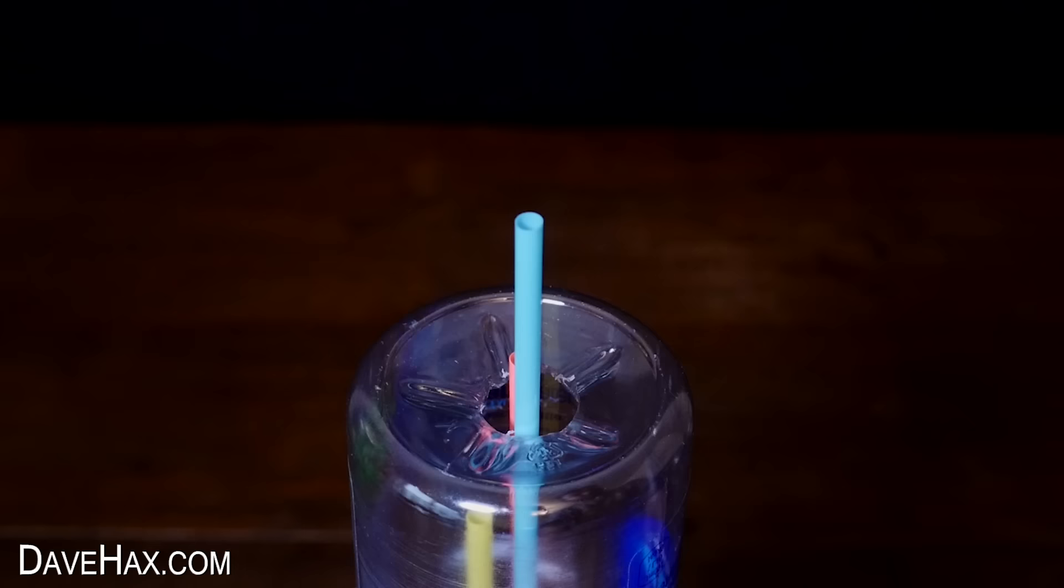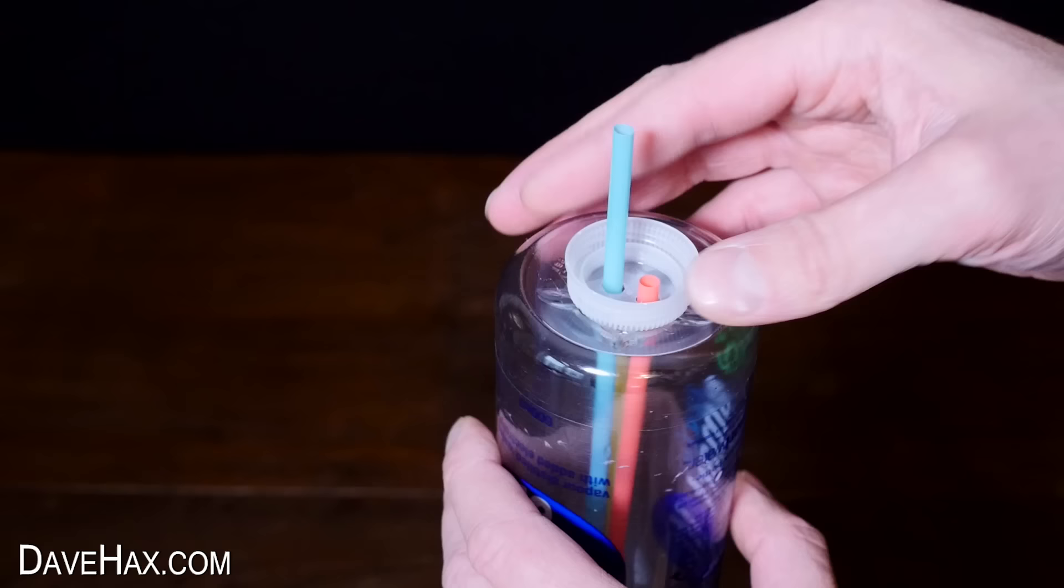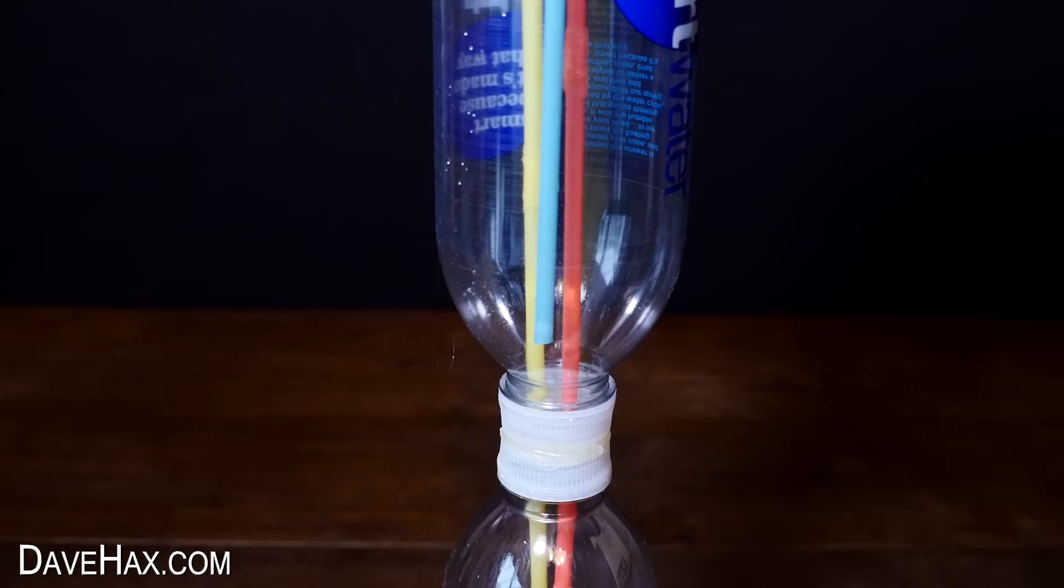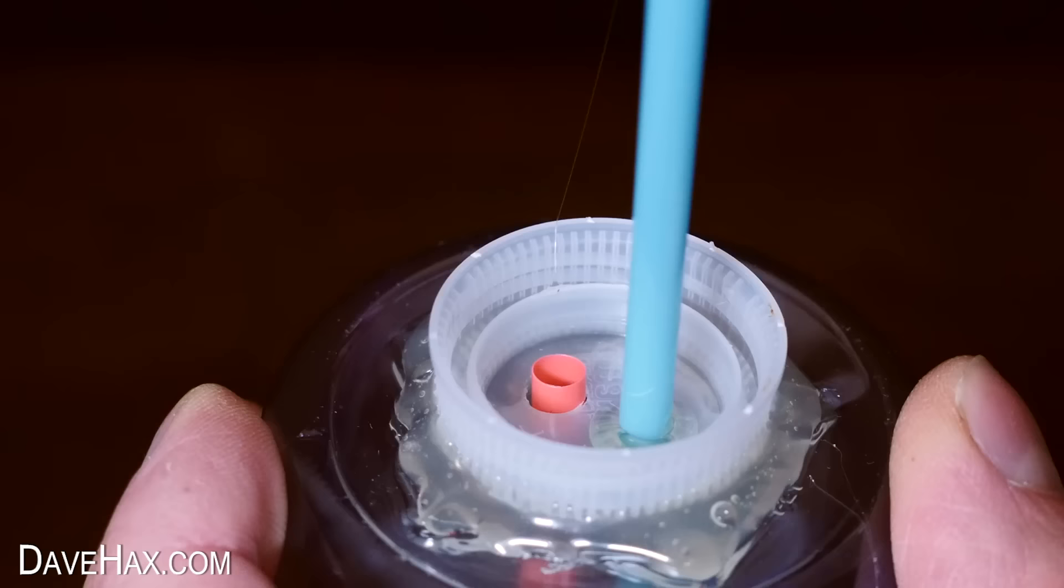I threaded it through the remaining bottle top and slid it down into the hole like this. We need to fix this all in position here. So I applied glue all around the hole and stuck the lid on. We need the blue straws to be raised about an inch off the bottom of the bottle.